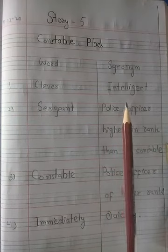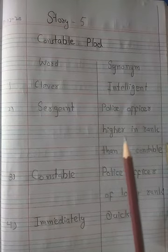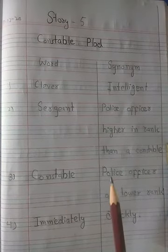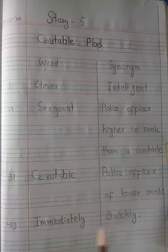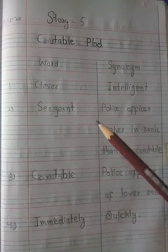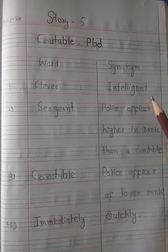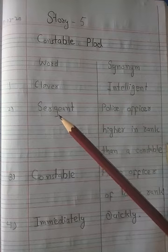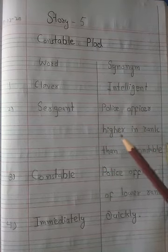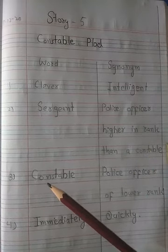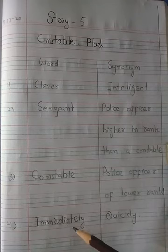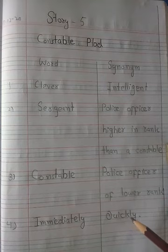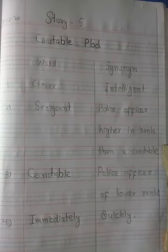Number one: clever — synonym: intelligent. Number two: sergeant — synonym: police officer, higher in rank than a constable. Number three: constable (C-O-N-S-T-A-B-L-E) — police officer of lower rank. Number four: immediately (I-M-M-E-D-I-A-T-E-L-Y) — synonym: quickly (Q-U-I-C-K-L-Y). Do your fair work clearly with neat and clean writing.